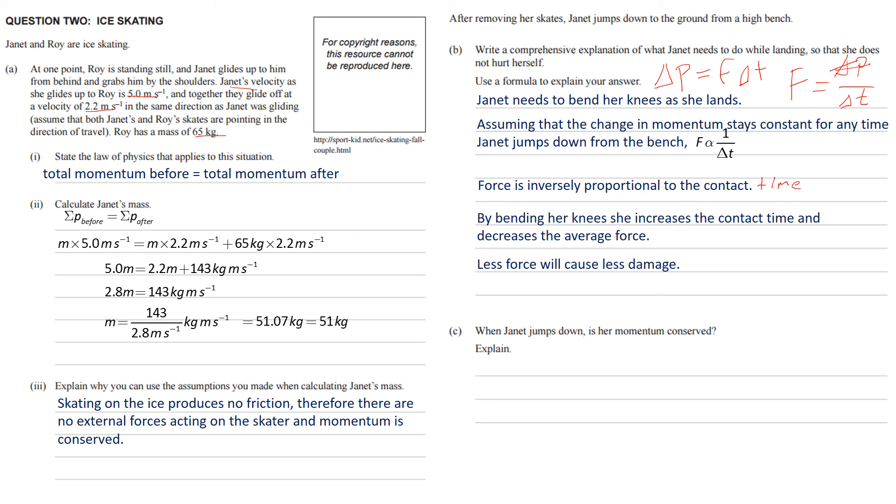Okay, next question. When Janet jumps down, her momentum is conserved. Explain. Okay, so this is a pretty straightforward answer. Oh sorry. Is her momentum conserved? No, it isn't. The momentum is not conserved because she has an unbalanced force acting on her: gravity.